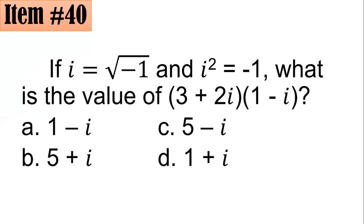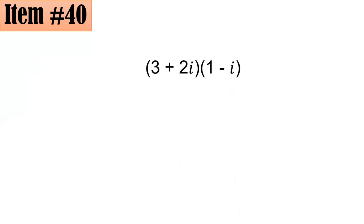Number 40. If i equals the square root of negative 1, your imaginary unit, and i squared equals negative 1, what is the value of 3 plus 2i multiplied by the quantity 1 minus i? Is it 1 minus i, 5 plus i, 5 minus i, or 1 plus i? Let's see if you got the correct answer. So employing again the FOIL method. So 3 times 1, that will be 3. 3 times negative i will be negative 3i. 2i times 1 will be plus 2i. 2i times negative i will be negative 2i squared.